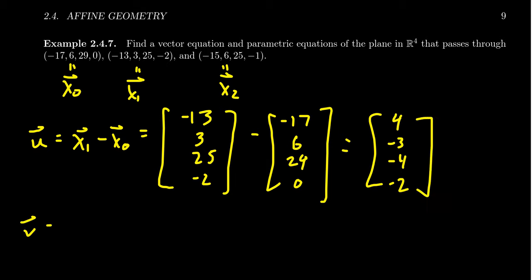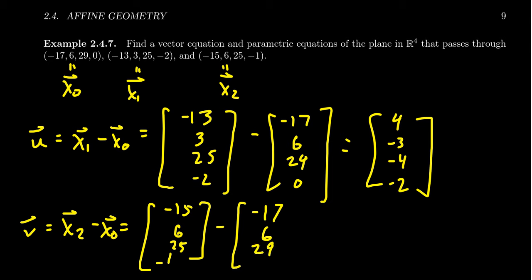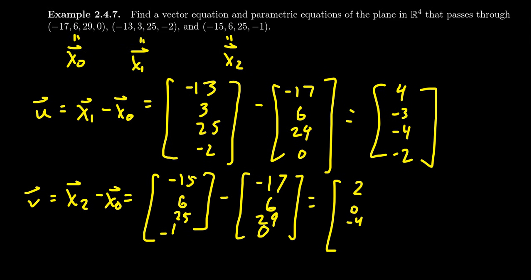The second spanner we're going to form by taking x₂ take away x₀, like so. So x₂ is listed above. We get (-15, 6, 25, -1). We're then going to subtract from it x₀, which is still -17, whoops, -17, 6, 29, and 0. And then taking the difference of those things right there, -15 take away -17, so positive 2. You probably don't need me to narrate the entire arithmetic here. We're going to get (2, 0, -4, -1). And so those are going to be our spanners.